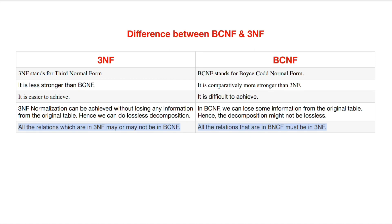3rd NF is easier to achieve, while BCNF is difficult to achieve. 3rd NF normalization can be achieved without losing any information from the original table — hence we can do lossless decomposition. In BCNF, we can lose some information from the original table, hence the decomposition might not be lossless.